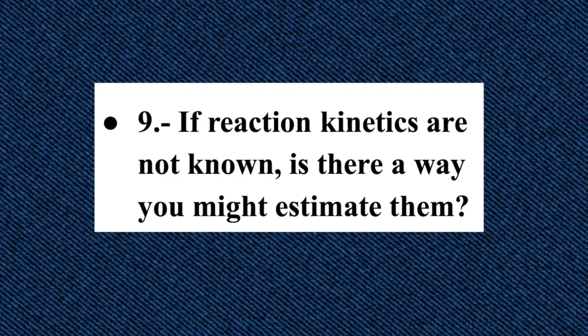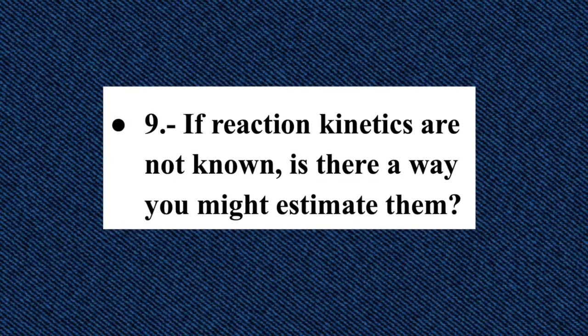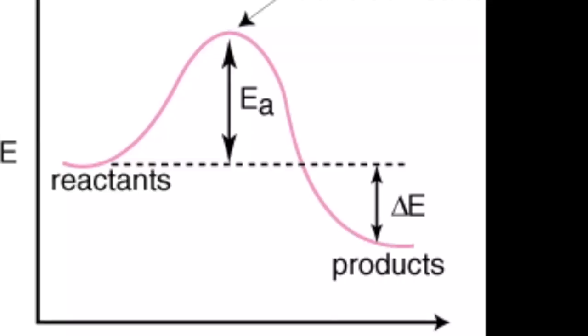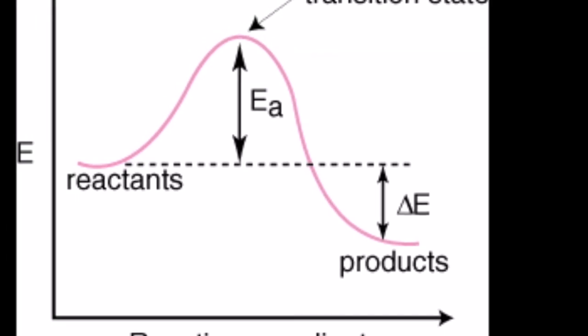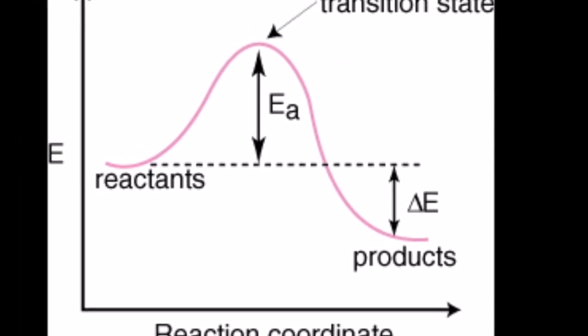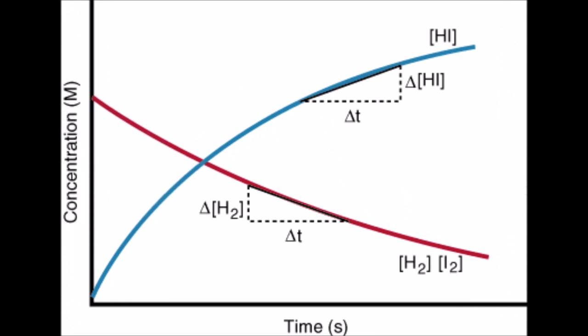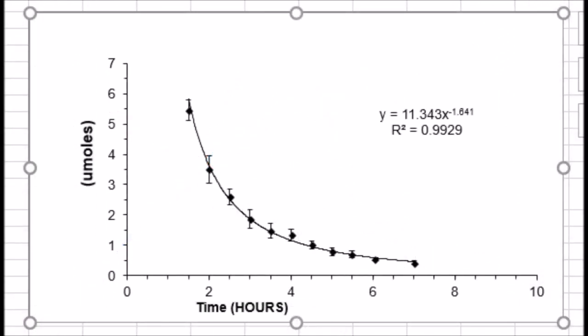Question nine: if reaction kinetics are not known, is there a way to estimate them? To get the value of the reaction rate, we need the slope of a concentration-versus-time graph. The problem is that those values are experimentally obtained. Nevertheless, if we could get experimental values of concentration, we could estimate the reaction rate.